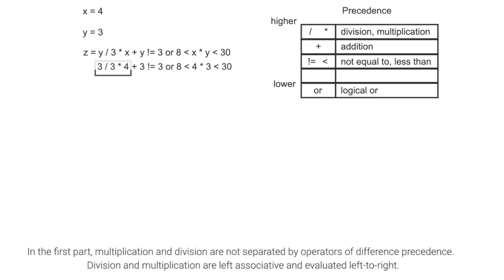In the first part, multiplication and division are not separated by operators of difference precedence. Division and multiplication are left associative and evaluated left to right.